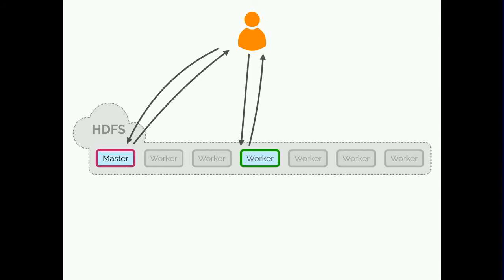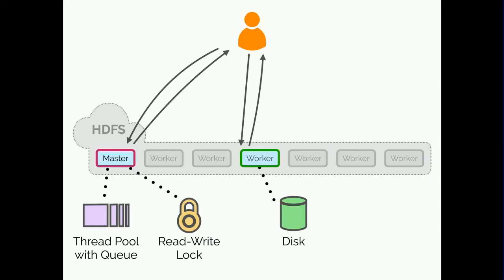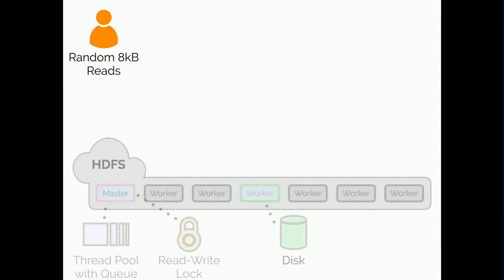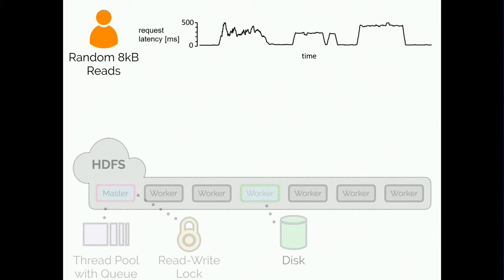To illustrate some of the challenges involved, here's a brief experiment with HDFS. We have a tenant reading data from HDFS: the execution looks up the location of the data and reads it from the appropriate worker. Along the way, it waits in a thread pool on the master, acquires a read lock to look up the file location, and accesses the worker's disk. Running this tenant in a loop making random 8KB reads and plotting execution latency over time, we see three clear periods of elevated latency corresponding to the temporary arrival of three other aggressive workloads. These workloads congest resources within HDFS and cause the tenant's end-to-end latency to increase.